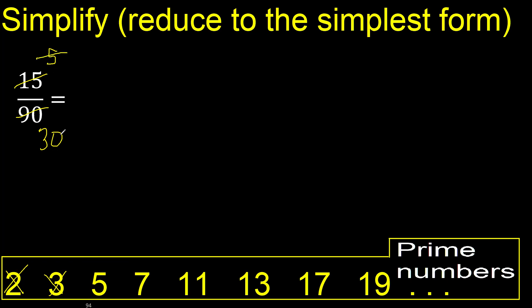Divided by 5: 5 divided by 5 is 1, and 30 divided by 5 is 6. We're finished, because 1 and 6 cannot be divided by the same number — so the process is complete.